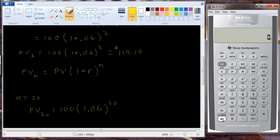We get one hundred times one point oh six to the twentieth power. So again we can use our calculator here. One point zero six raised, and you hit the y to the x key to raise it to a power, the twentieth power. And then times the one hundred. And so we get three hundred and twenty dollars and seventy one cents.